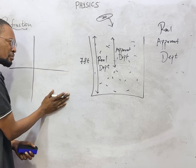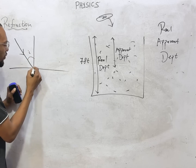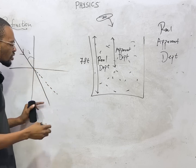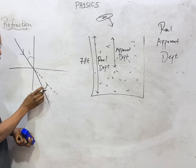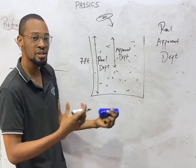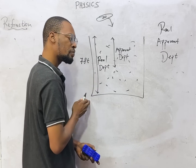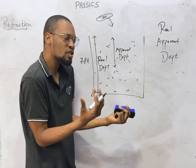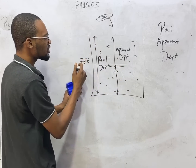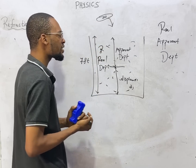If this is a less dense medium and this is a denser medium, when there is an incident ray, the light will refract and move closer to the normal. So this is what you appear to see, but this is what is actually there. The difference between what is supposed to be and what you actually see is called the displacement or deviation. The real depth can be called R and the apparent depth can be called A.